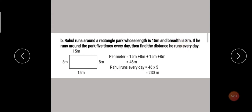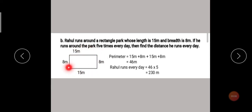Only two measurements are given. A rectangle has 4 sides. As I taught you earlier, a rectangle has opposite sides equal. This side is 15 meters, so the opposite side is also 15 meters. This side is 8 meters, so the opposite side is also 8 meters. We get the measurement of all four sides. Because Rahul runs around the park, we have to find the perimeter. If we find the perimeter, we know how many meters distance he covers.